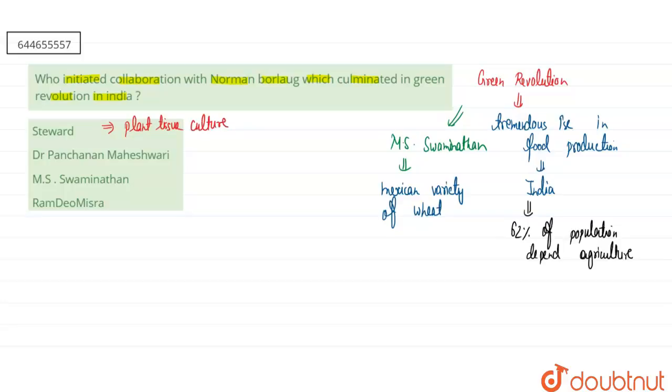The second one is Dr. Panchanan Maheshwari. He was related to the technique of test tube fertilization in the angiosperms. He was mainly associated with the process of test tube fertilization in the angiosperms or in the flowering plants.